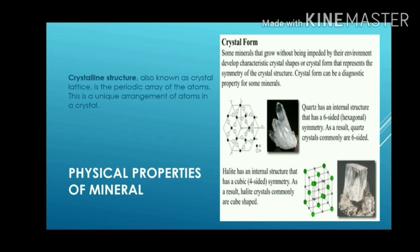For example, quartz has an internal structure with a six-sided hexagonal symmetry — so quartz crystals commonly are six-sided. Halite has an internal structure with a cubic four-sided symmetry — it is shaped like a cube — so halite crystals commonly are cube-shaped.